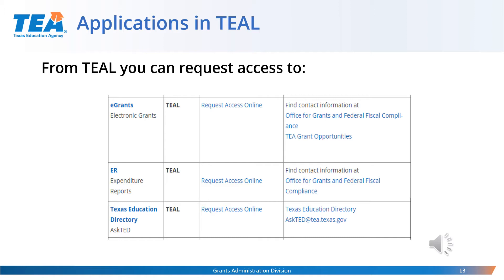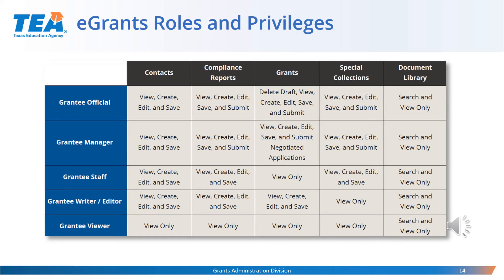When requesting access through TEAL, you will need to request eGrants access. The eGrants roles table shows specifically the roles in blue on the left with different capabilities based on the area tabs in black along the top. For example, in the Contacts tab, all roles except grantee viewer can modify information. In the Special Collections tab working on the SC5003, only a grantee official or grantee manager can submit changes. When working on the grant application, only the grantee official can submit the original application. Contact your TEA grant negotiator if you need assistance identifying the proper role.